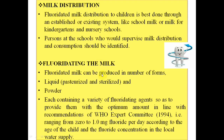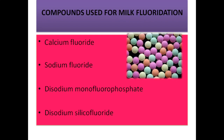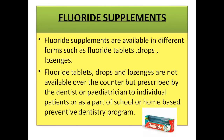Fluoridated milk can be distributed through school milk programs for kindergarten or nursery schools. It can be produced as liquid (pasteurized and sterilized) or as powder mixed into milk. Just like salt fluoridation, batch processing and continuous processing methods are used. Products used include calcium fluoride, sodium fluoride, disodium monofluorophosphate, and disodium silicofluoride.